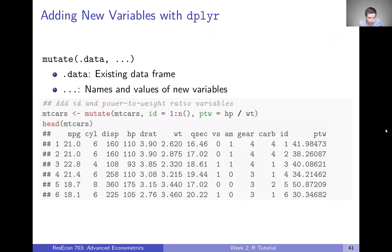So the first one is mutate. That's how you add new variables with dplyr. And the way it works is mutate first takes a data frame as its first argument, and then a flexible number of new names and values of variables. Let's see it in an example. I think that's going to be the best way. We're going to say we want our mtcars data frame to be, we're going to start with mtcars and we're going to mutate.